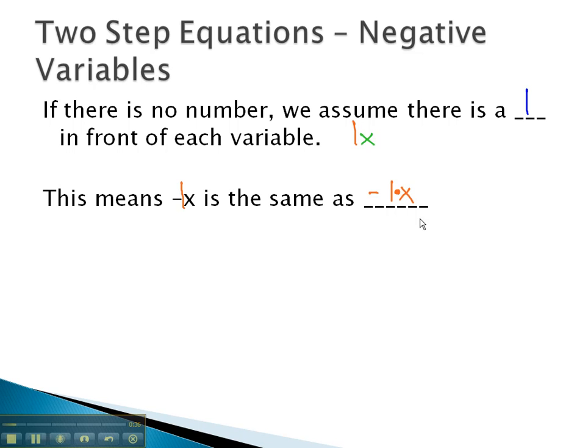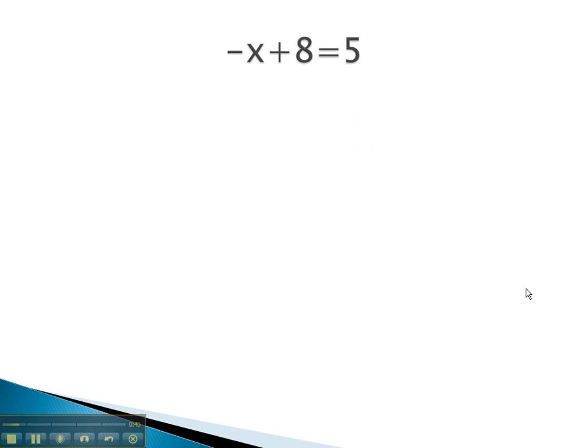If we can keep that in mind, it should work like every other two-step equation. For example, if we see negative x plus 8 equals 5, and we want to know what is the value for x that makes this true.